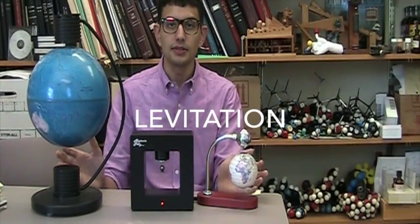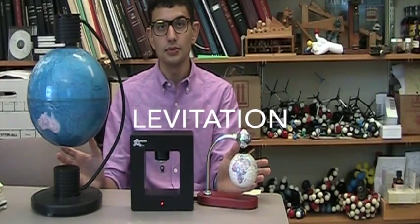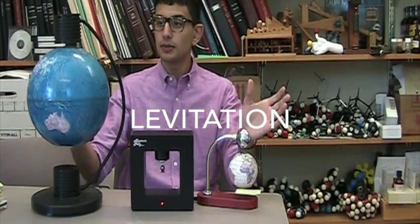Each of these three devices utilizes magnets to levitate different objects. In the case of these two, they levitate globes, and in this case, a magnetic ball or magnetic sphere.